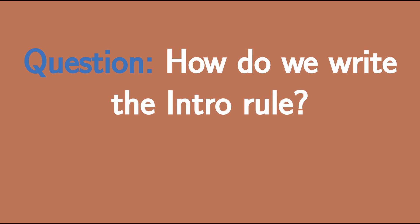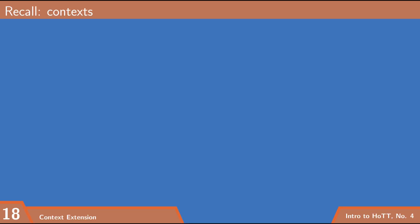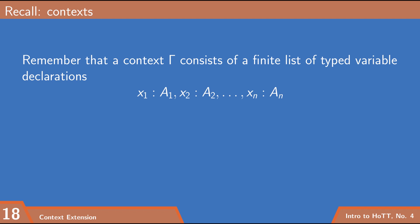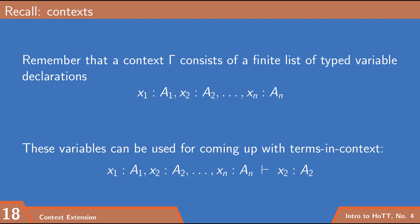Let me introduce a few new concepts. When we're in the deductive calculus, we work with contexts. A context is a finite list of typed variable declarations stating all the free variables I'm allowed to use in my term — something like x1 of type A1, x2 of type A2, and so on. These variables can be used to come up with terms in context.